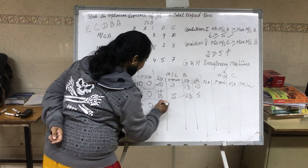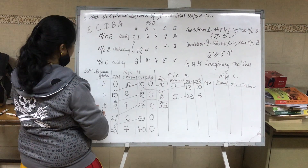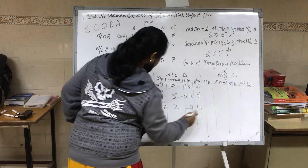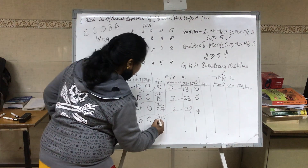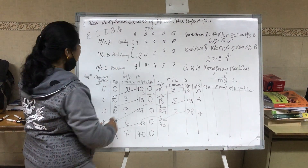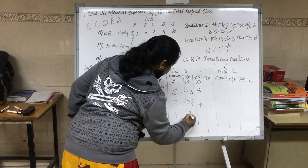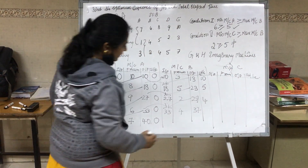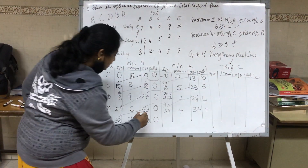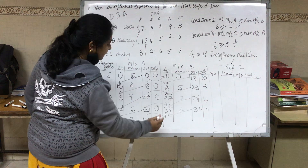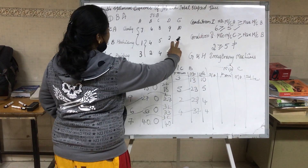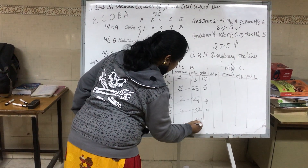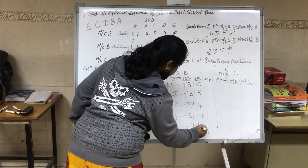For job D on machine B: compare outputs 27 vs 23 — 27 is highest. Process = 2, output = 29, idle = 27 minus 23 = 4. For job B: compare 33 vs 29 — 33 is highest. Process = 4, output = 37, idle = 33 minus 29 = 4. For job A: compare 40 vs 37 — 40 is highest. Process = 1, output = 41, idle = 40 minus 37 = 3. Wait — job A machine B process is 1, so 40 + 1 = 41, idle = 40 minus 37 = 3. Machine B is complete.